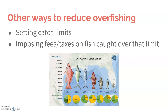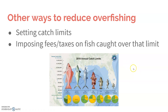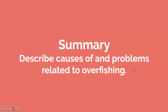Other solutions include setting catch limits and imposing fees or taxes on catches over that limit, which encourages people not to overfish because they have to pay more. As of 2019, annual catch limits are in place for fish in areas like the Gulf of Mexico. In summary, the key learning goal is to describe the causes of and problems related to overfishing.